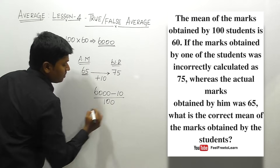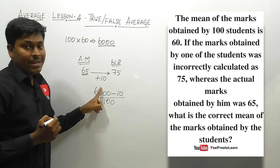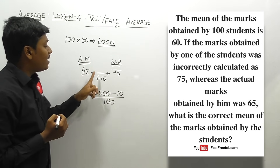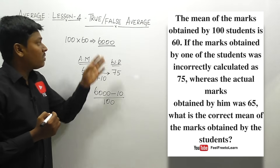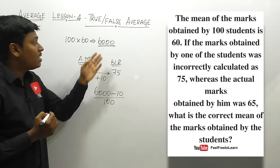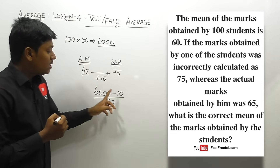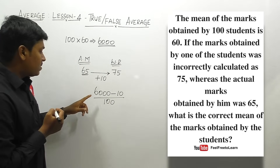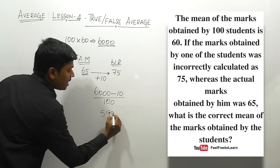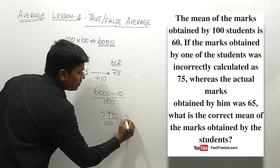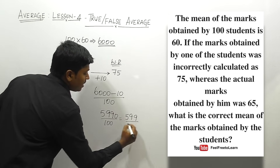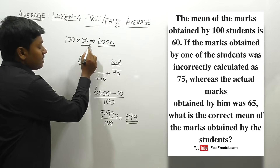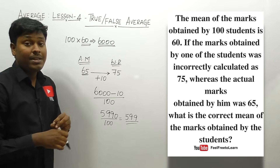The wrong reading taken was 75 instead of 65 — that is 10 marks more. So we subtract 10 from the total: (6000 − 10) ÷ 100 = 5990 ÷ 100 = 59.9. The correct average is 59.9, compared to the wrong average of 60.